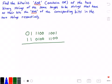Hey guys, and welcome to this video on the bitwise XOR operation. So here we want to find the bitwise XOR, or also known as the exclusive OR, of two binary strings of the same length to be strings that have as their bits the XOR of the corresponding bits in the two strings respectively.